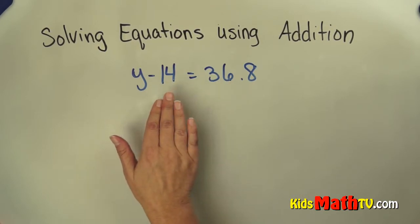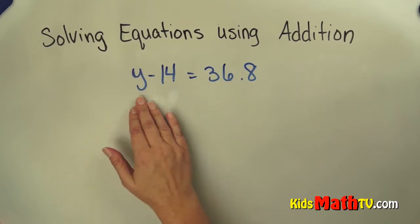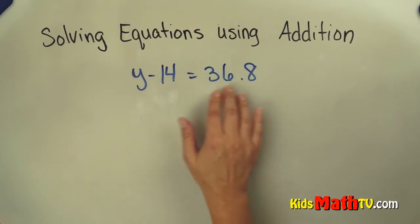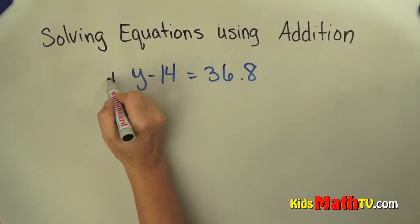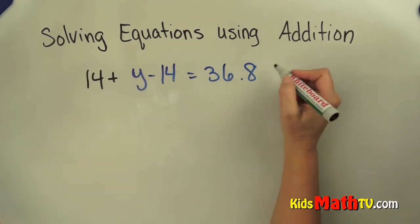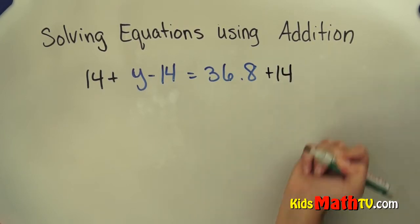Because negative 14 and 14 gives me 0 which will leave me just y. But whatever I do to one side of the equation I have to do to the other side of the equation. So I am going to add 14 to this side and add 14 to that side of the equation.